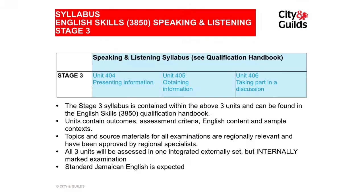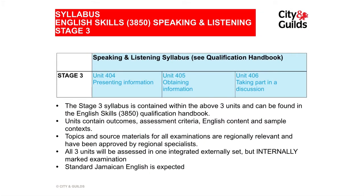So where can I find the syllabus, Hilary? All of the things that need to be taught and practised can be found in the qualification handbook. If you look at Level 2 within the handbook, you'll see the syllabus contained within three units. Each unit has outcomes and assessment criteria, and all of those need to be covered to fully prepare the candidate for the assessment. You need to look carefully at the outcomes, assessment criteria, and any additional guidance in the handbook.